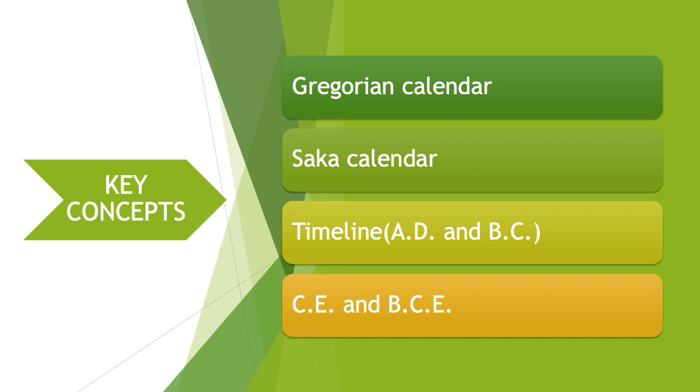In this chapter we are going to learn about the Gregorian calendar, the Saka calendar, and we are going to learn about timeline. We are also going to learn what we mean by AD, BC, CE and BCE.